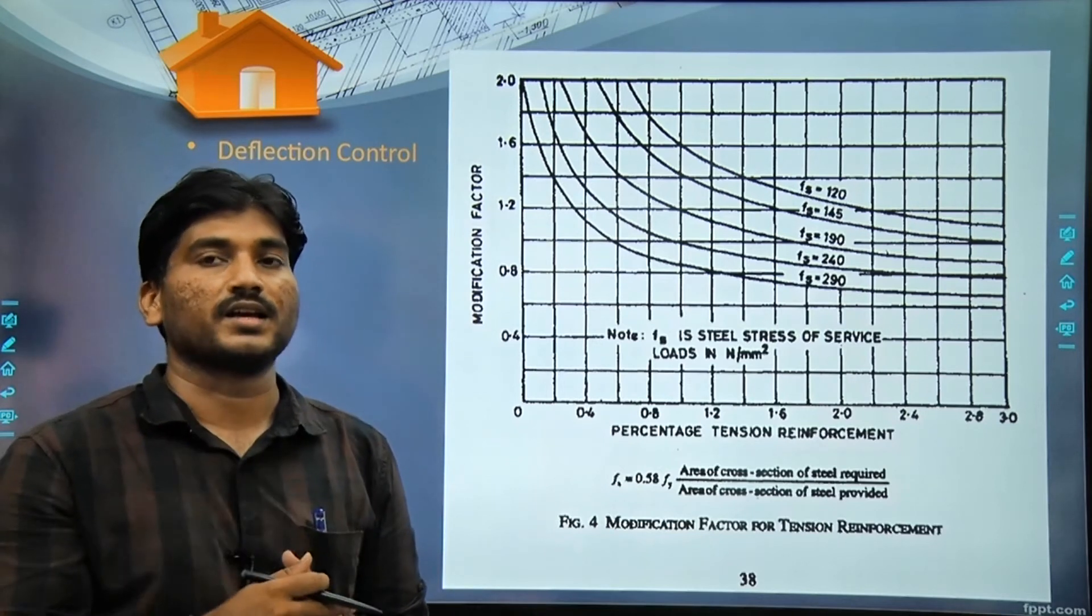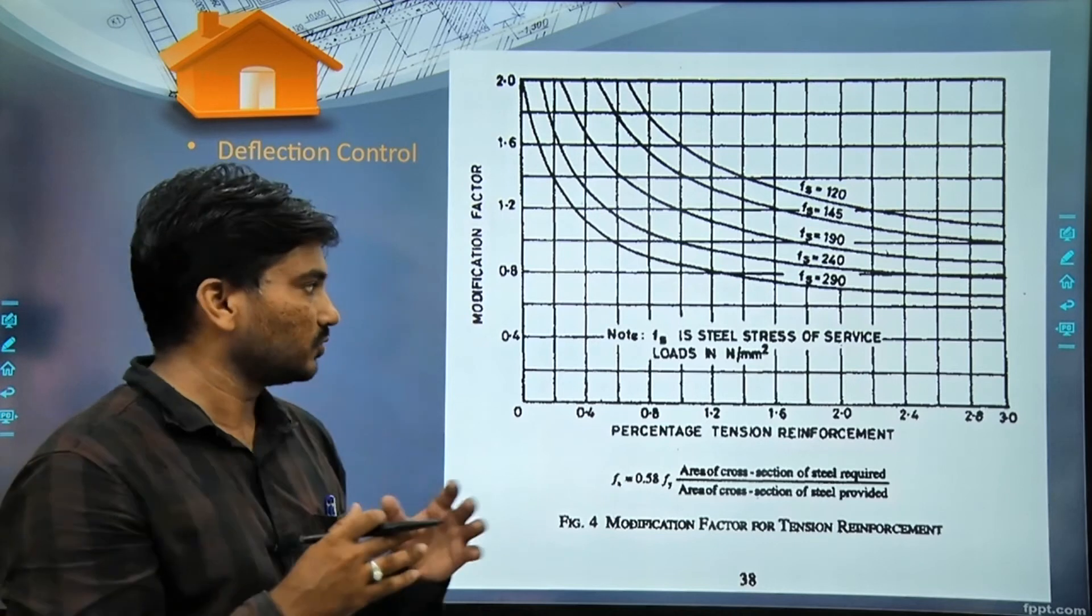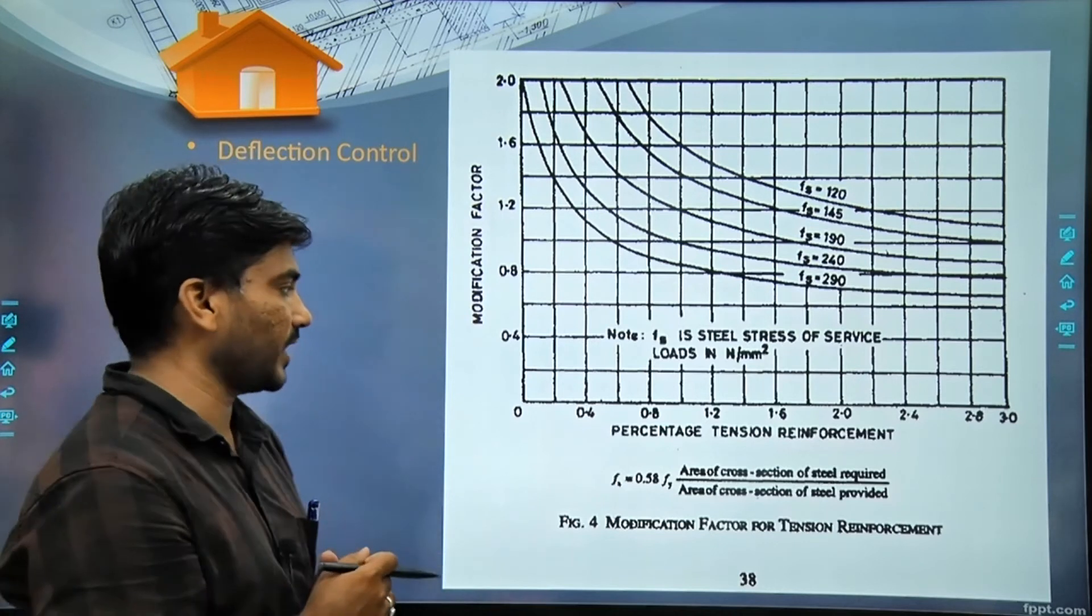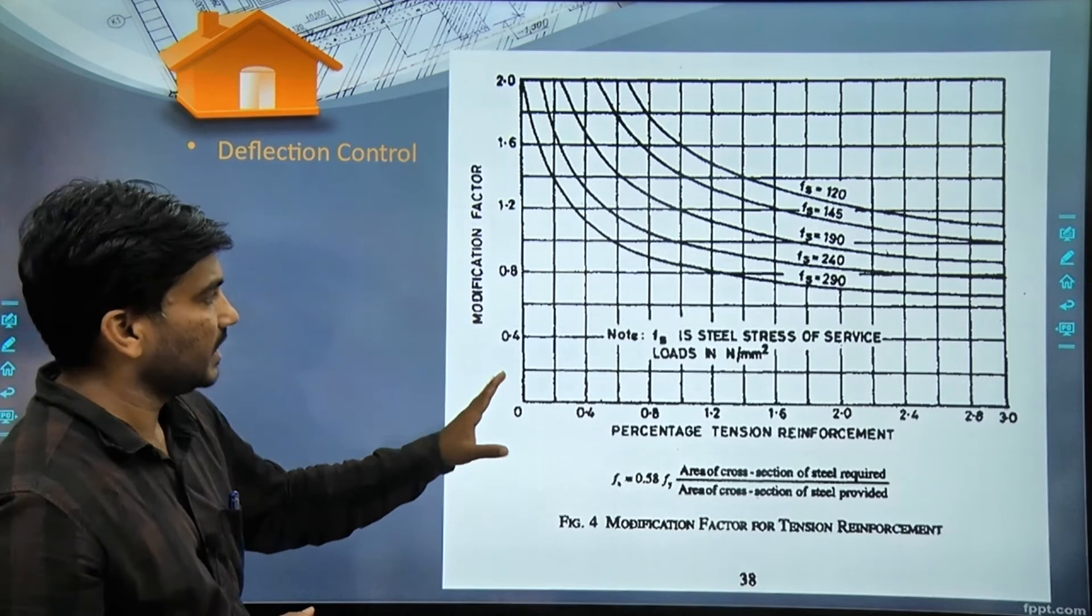Span by depth ratio for cantilever is 7, for simply supported beam is 20, for continuous beam is 26 - this has to be modified with modification factor.